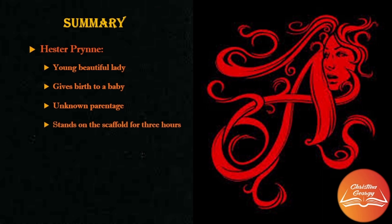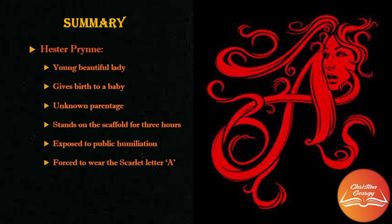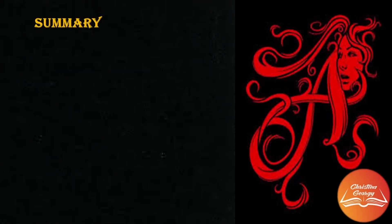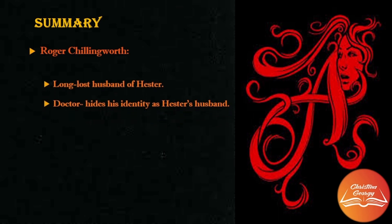Hester gets forced to stand on a scaffold for three long hours and is exposed to public humiliation. She also gets forced to wear the scarlet letter 'A', symbolic of adultery, for the rest of her life. But despite the efforts of every authority, she refuses to name the child's father. Later, as Hester looks out over the crowd, she notices her long-lost husband — Roger Chillingworth — who is a doctor. He hides his identity as Hester's husband because he is totally disappointed with his wife's adulterous act.